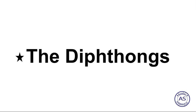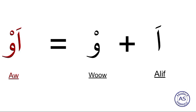Hi guys, welcome to Arabic Shala, hope you all are fine. Today we're going to read about diphthongs. To understand diphthongs, watch the video till the end without skipping. Diphthongs in Arabic means two vowels following each other and pronounced as one syllable or sound — in an easy way, two sounds merging into one sound. Let's see and understand with examples.